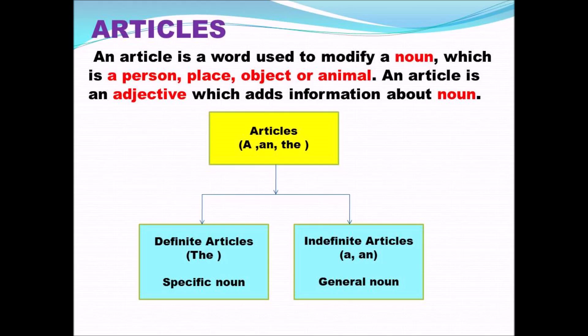Before starting definite articles, we will just see the recap of indefinite articles which we have learnt in the last class. So, what is an article? An article is a word used to modify a noun, which is a person, place, object or animal.